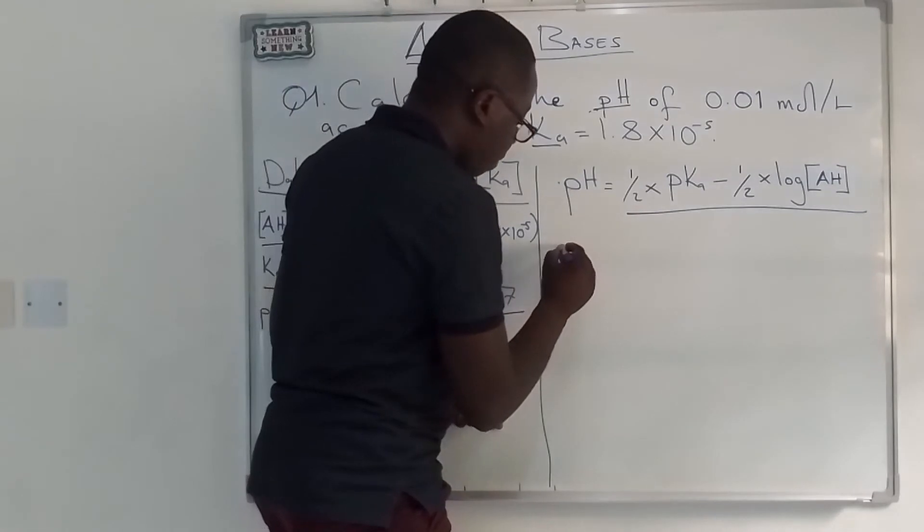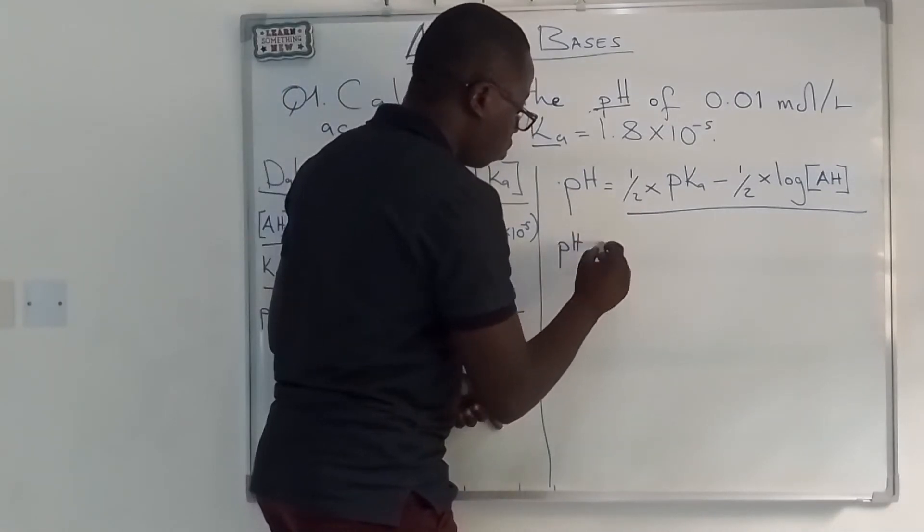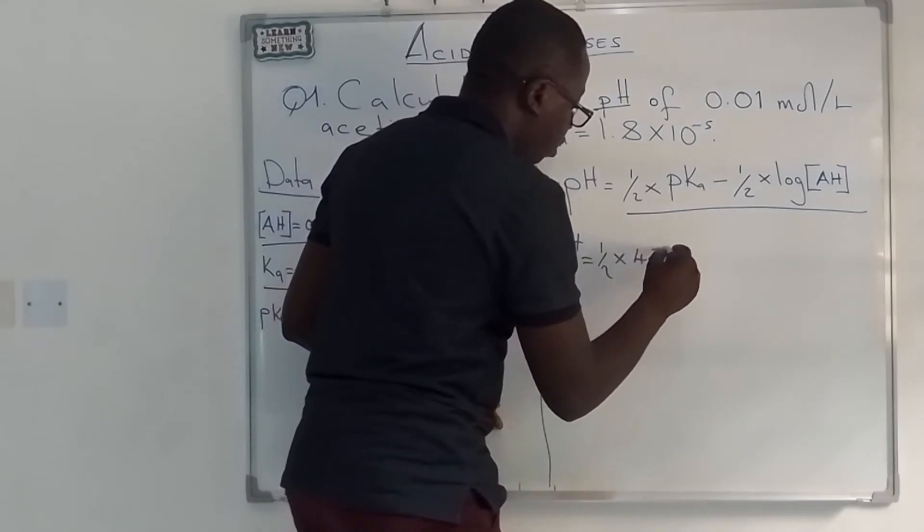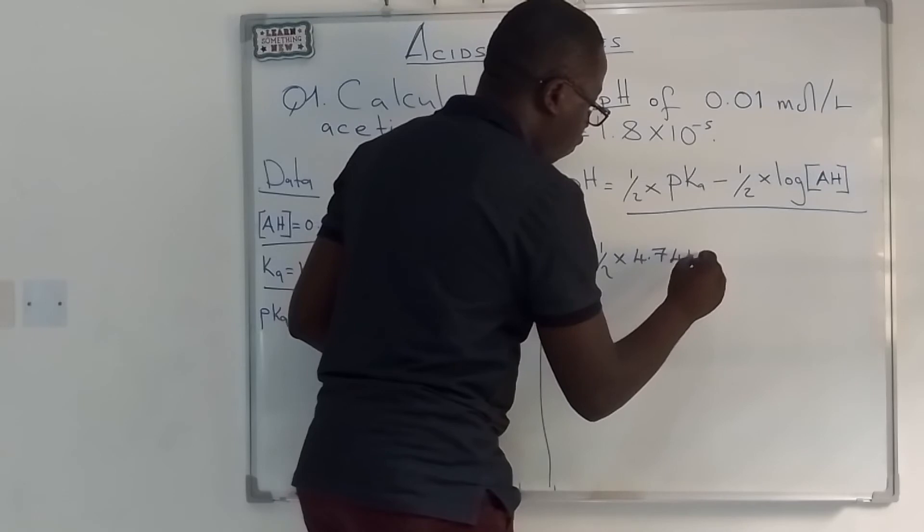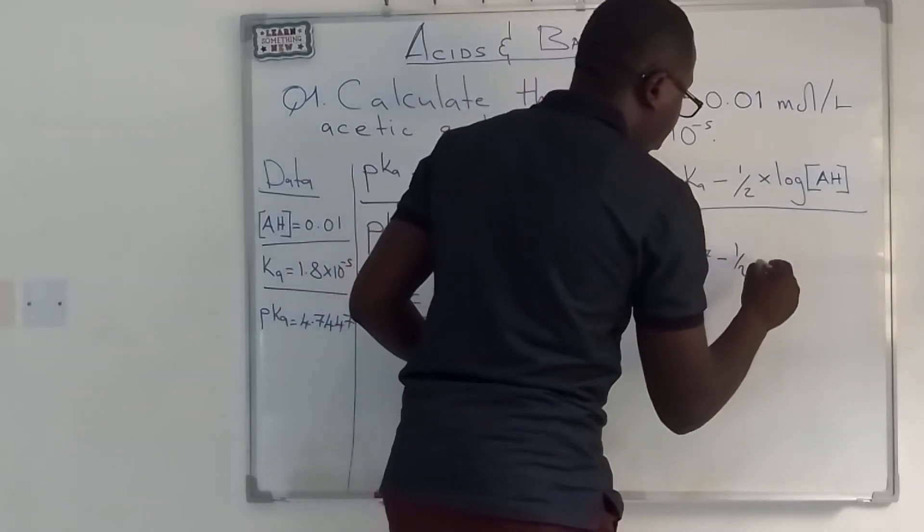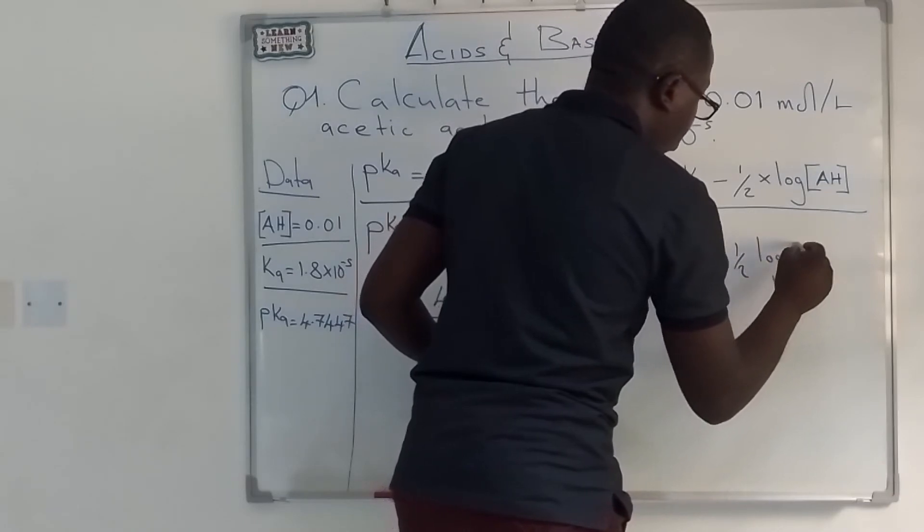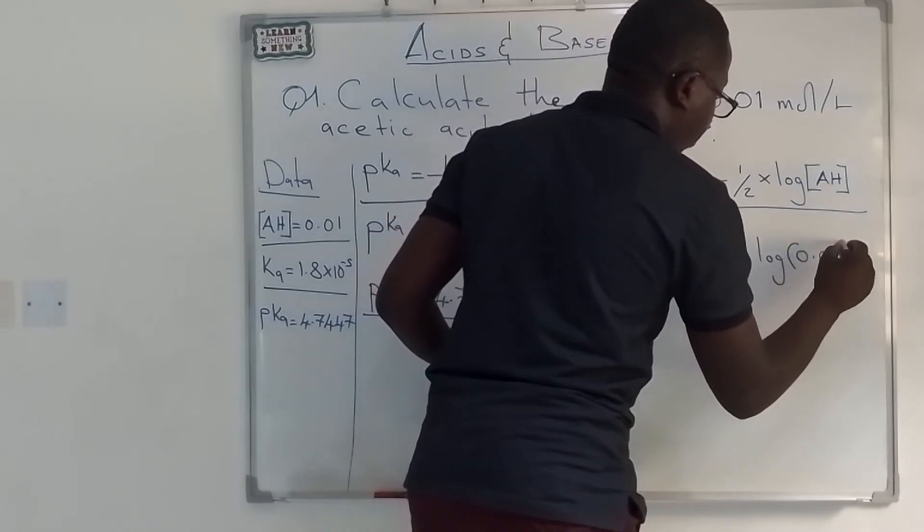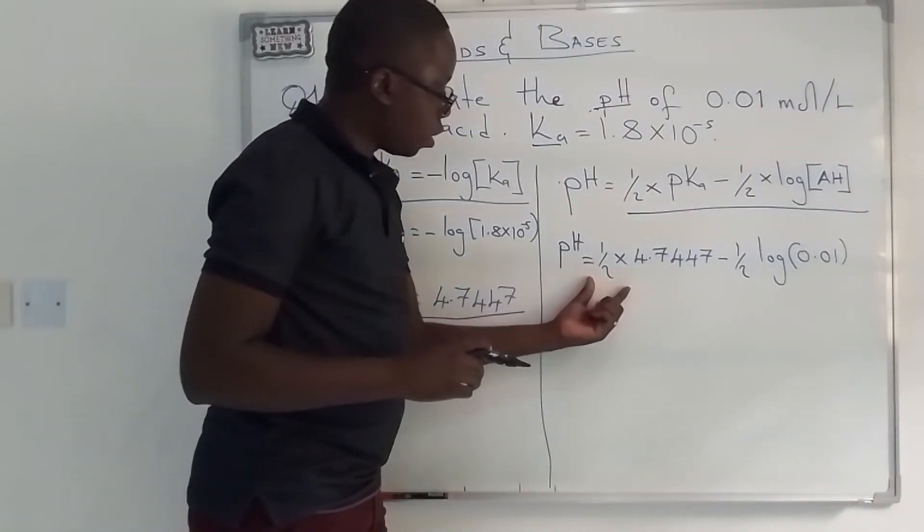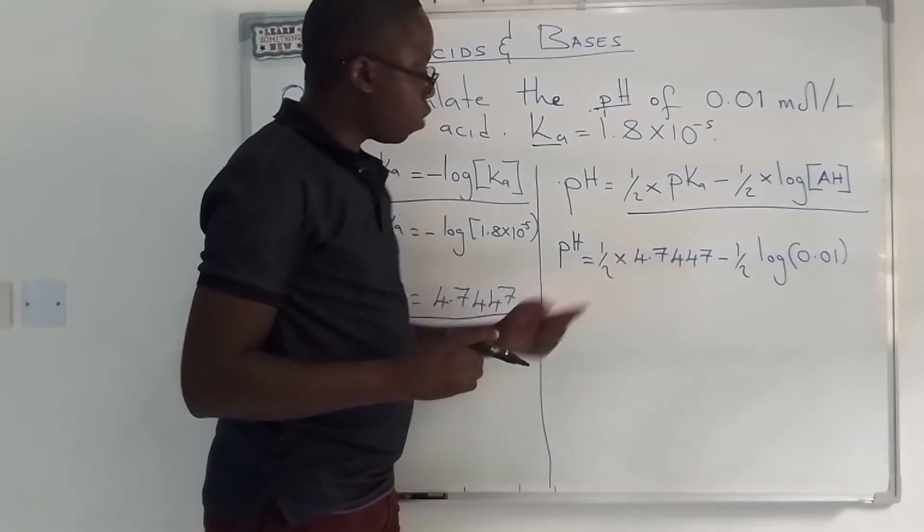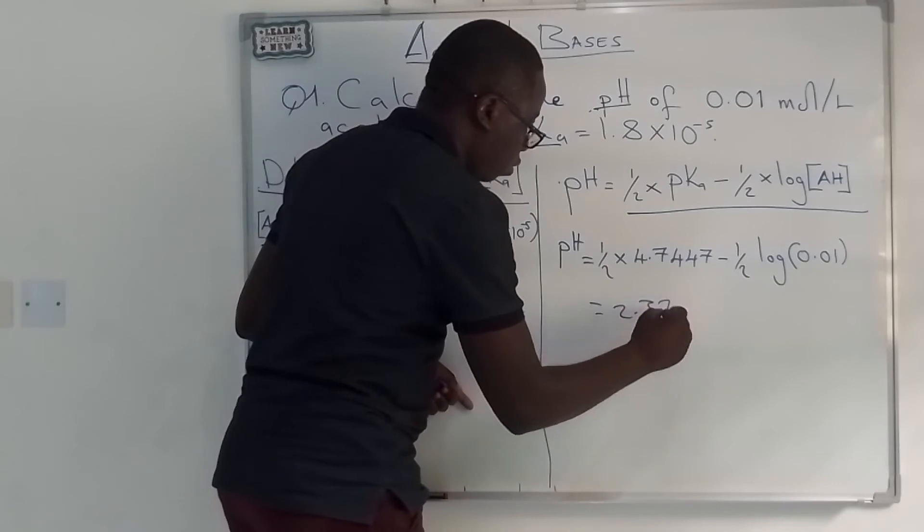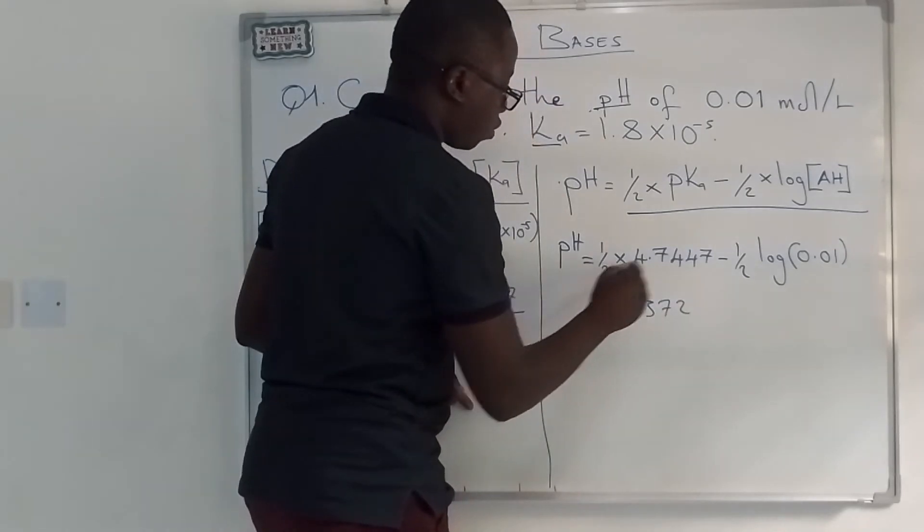So we'll say pH is equal to half times 4.7447 minus half log of 0.01. Now, if we do our mathematics, half of this should give us 2.372. That is half of this.